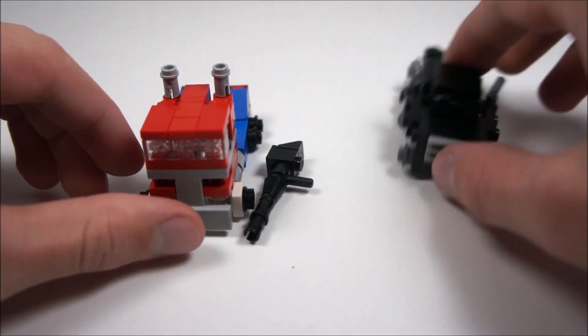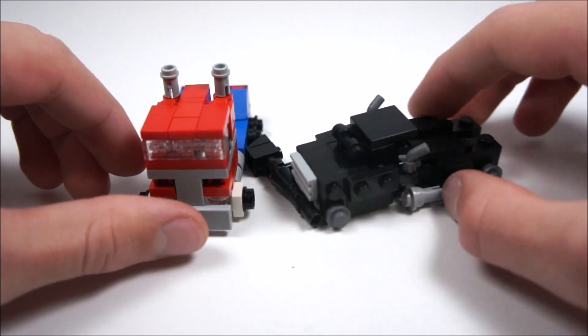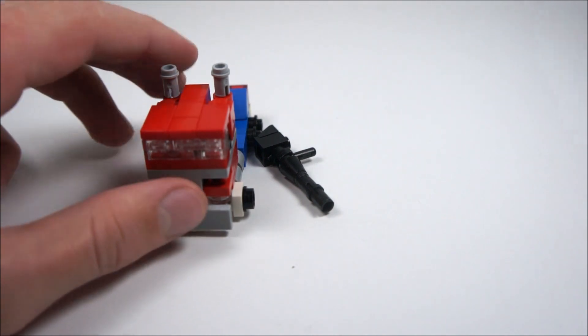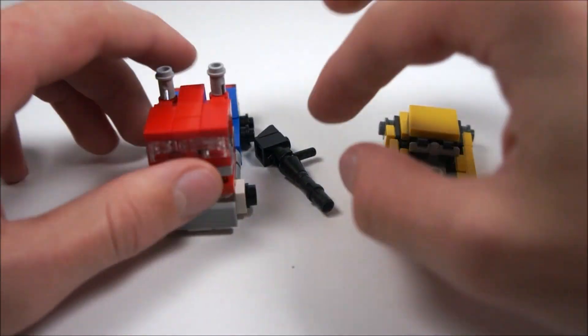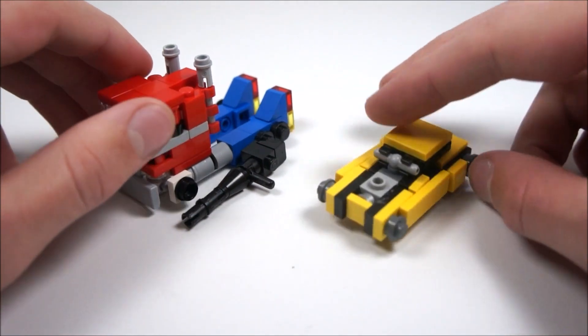Here it is compared to Ironhide version 1.5. Here he is compared to Bumblebee version 2.